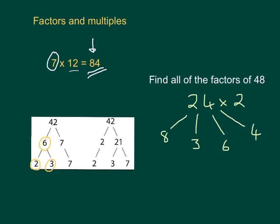Now there's lots of ways you could have gone about this. I did 24 times 2 and then found all the factors of 24 and then worked out all the pairs. Well, 8 times 6 is 48, 3 times 16 is 48, 4 times 12 is 48, and of course 1 and 48 must be factors as well.